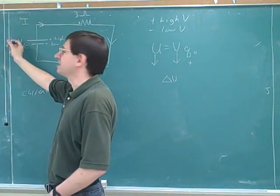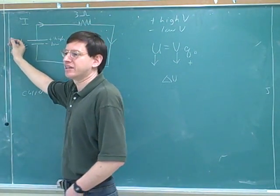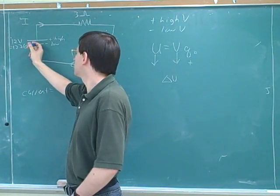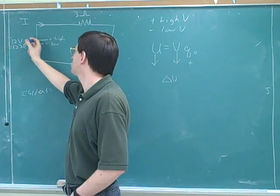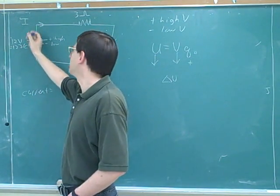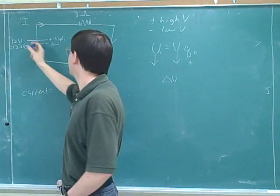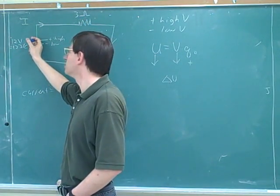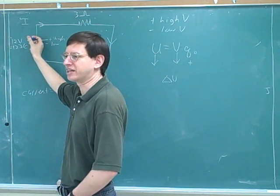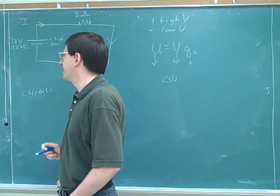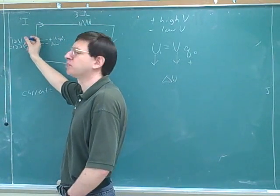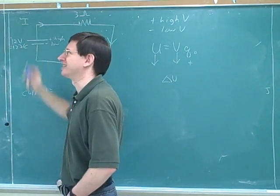Another way to think about this is in terms of height. We can think of this as moving the charges to a point that's 12 units higher, and then they would naturally just fall back down to the lower point again, and then it moves them up to a point that's 12 units higher again.